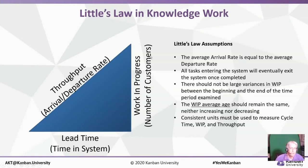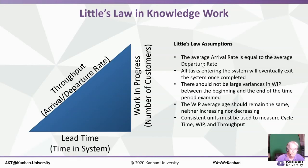There are a number of assumptions in Little's Law in order to make it work. One is that the average arrival rate is equal to the average departure rate — whatever is coming into the system is actually going out. We have a steady state flow, which is a very important base assumption. We assume that tasks entering the system will eventually exit the system. We're not expecting large variances in work in progress between the beginning or end of the time period examined. The average age should be about the same, neither increasing nor decreasing. And we need to be using consistent units throughout to measure cycle time, WIP, and throughput.